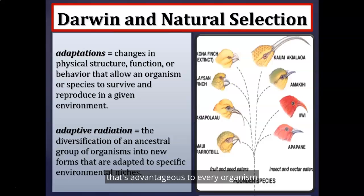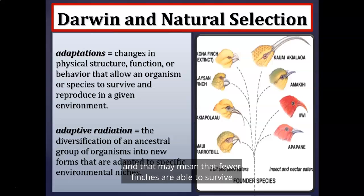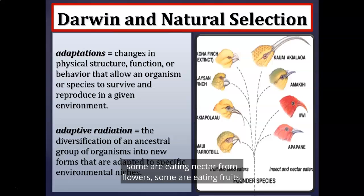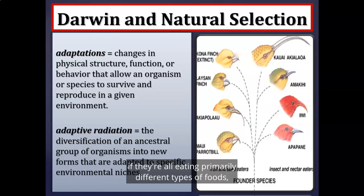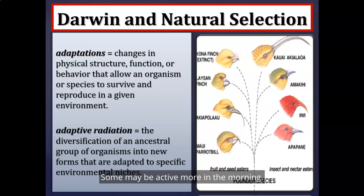This is advantageous because if all finches tried to eat the same food type, they'd come into direct competition with one another, and fewer would survive. But if some eat seeds, some eat nectar from flowers, some eat fruits, they're not in direct competition as often. They may also be active at different times — some more in the morning, some in the evening, some in the afternoon, some even nocturnal.